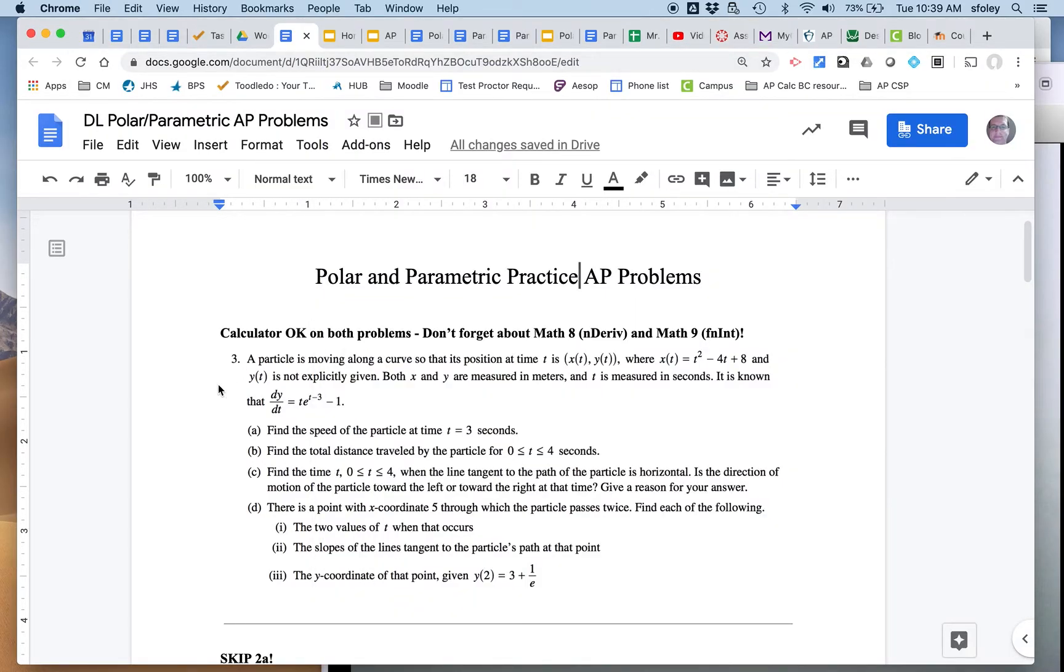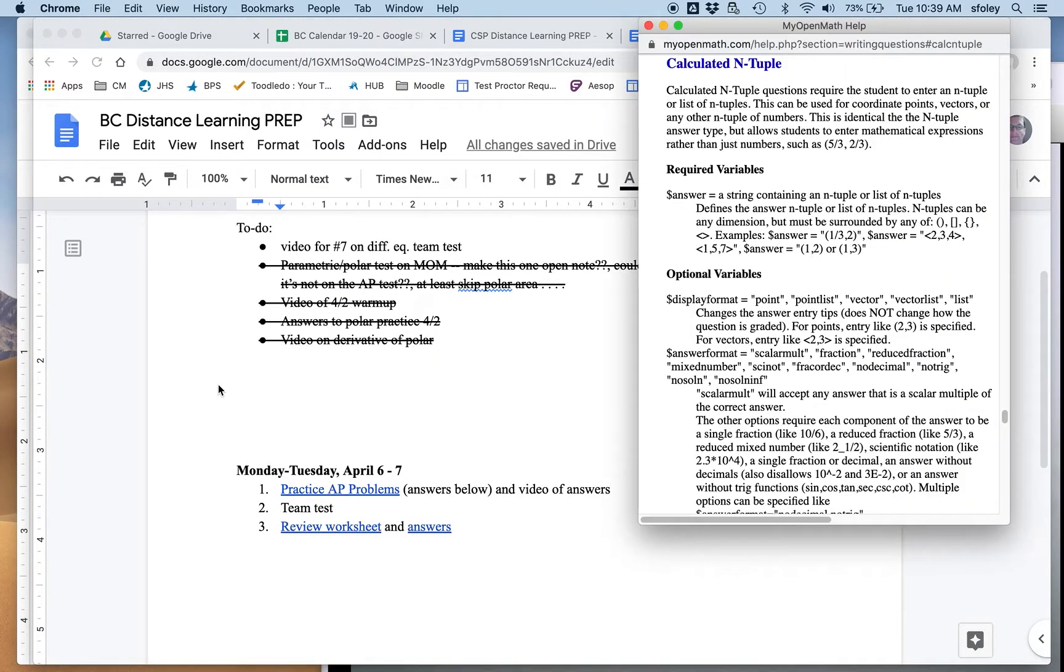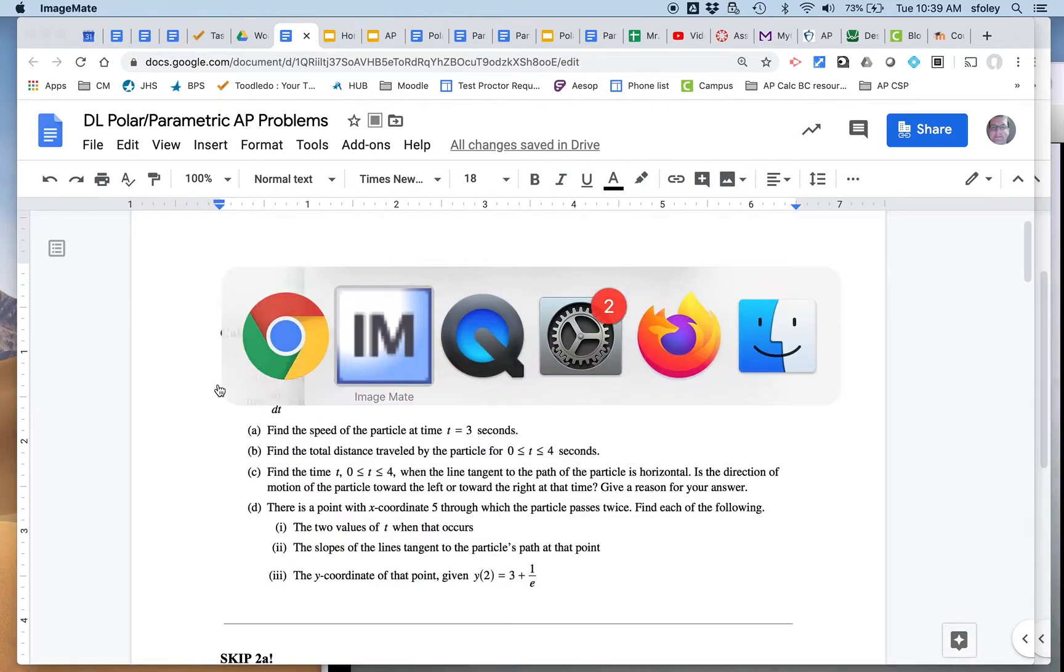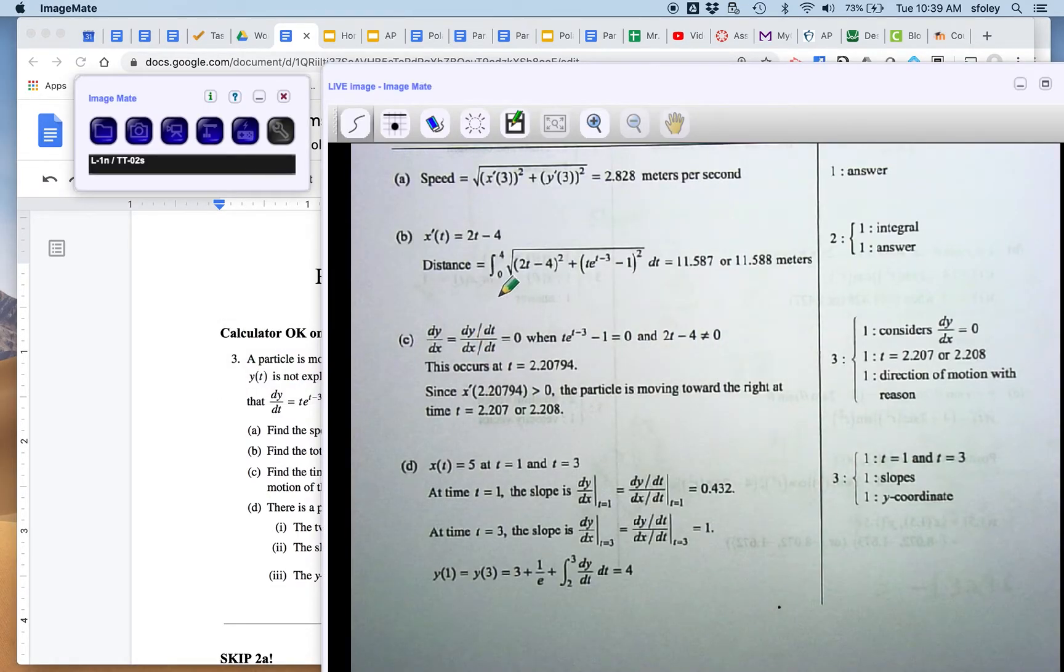Part B, you find the total distance traveled. Total distance traveled is the integral of the square root of the velocity, the integral of the speed, basically. And so this part here is x prime, which they found, and then y prime was given already, and so you use that formula, and of course you do the integral on your calculator.